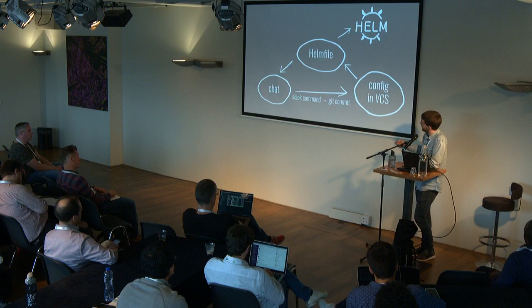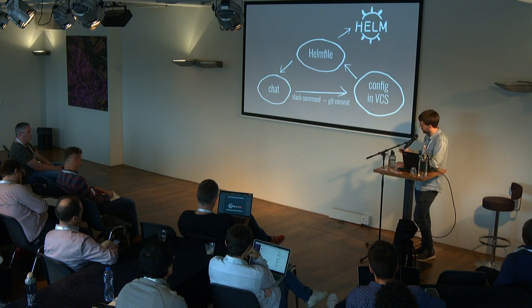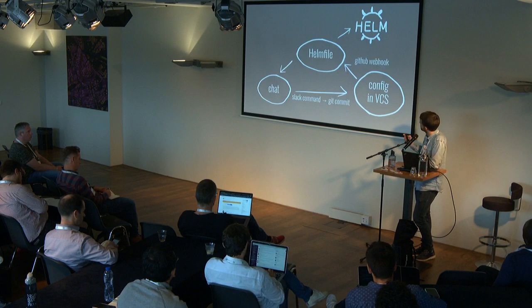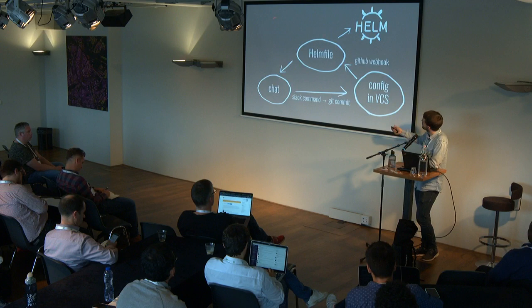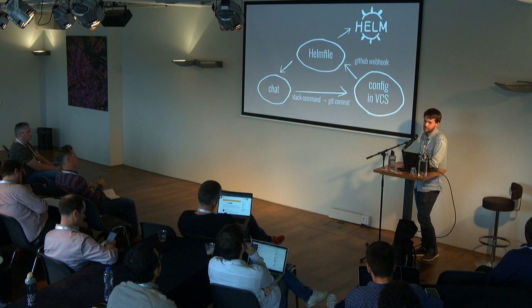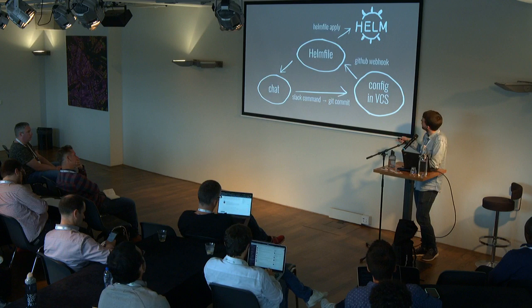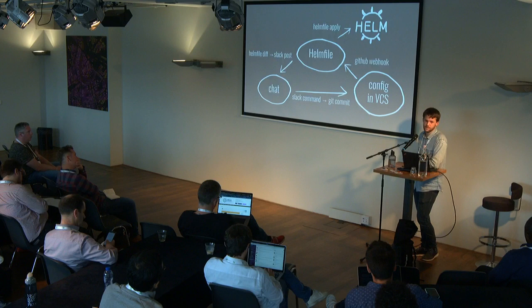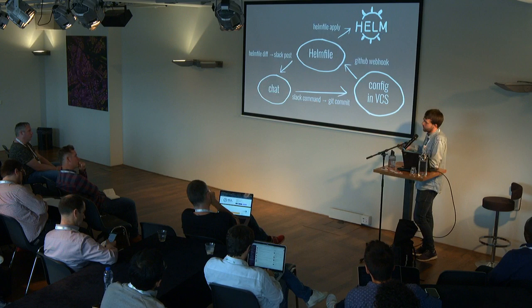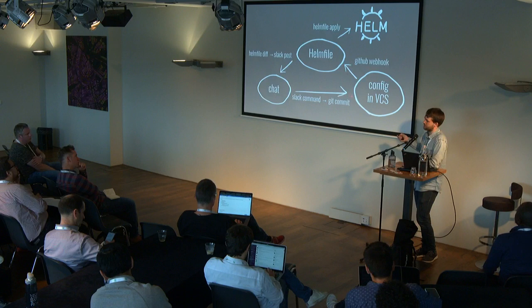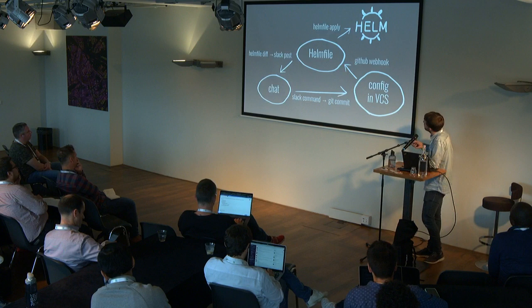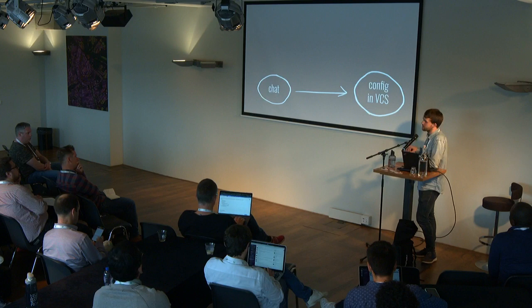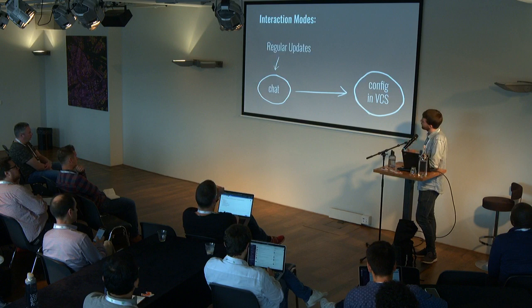Technically, we have a Slack command that triggers operations in the repository. We do a Git commit, it gets pushed to GitHub, there we have a GitHub webhook that triggers a small service running in our cluster. This service listens for the webhook and applies the changes to the whole cluster, and also posts the diff back to the chat. So we are notified when the operation from the chat is finished, or also notified if somebody is just changing things directly in the repository.